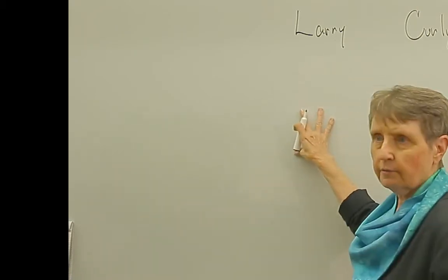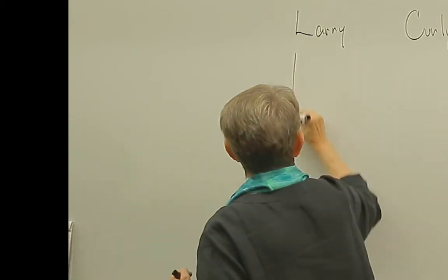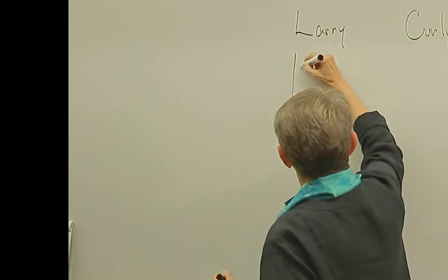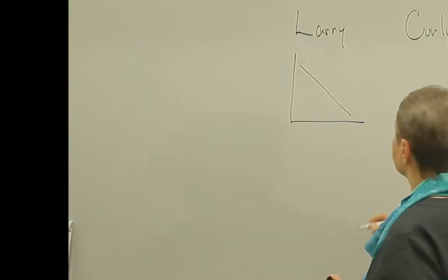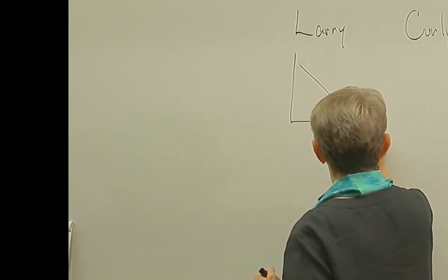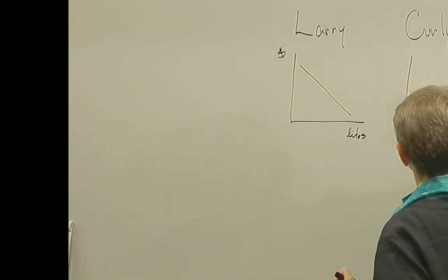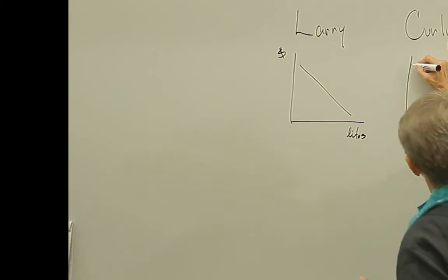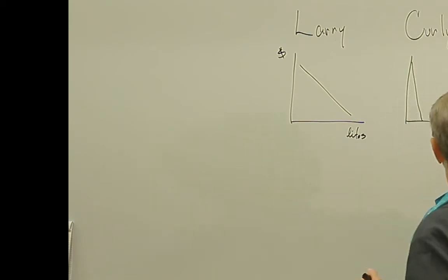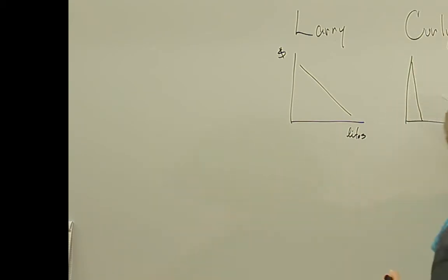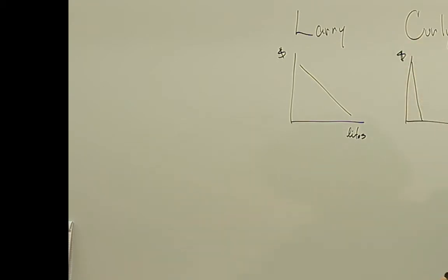Larry has a demand for street lights. So here's Larry and here's Larry's demand for street lights. And Curly also has a demand for street lights. And Moe also has a demand for street lights.